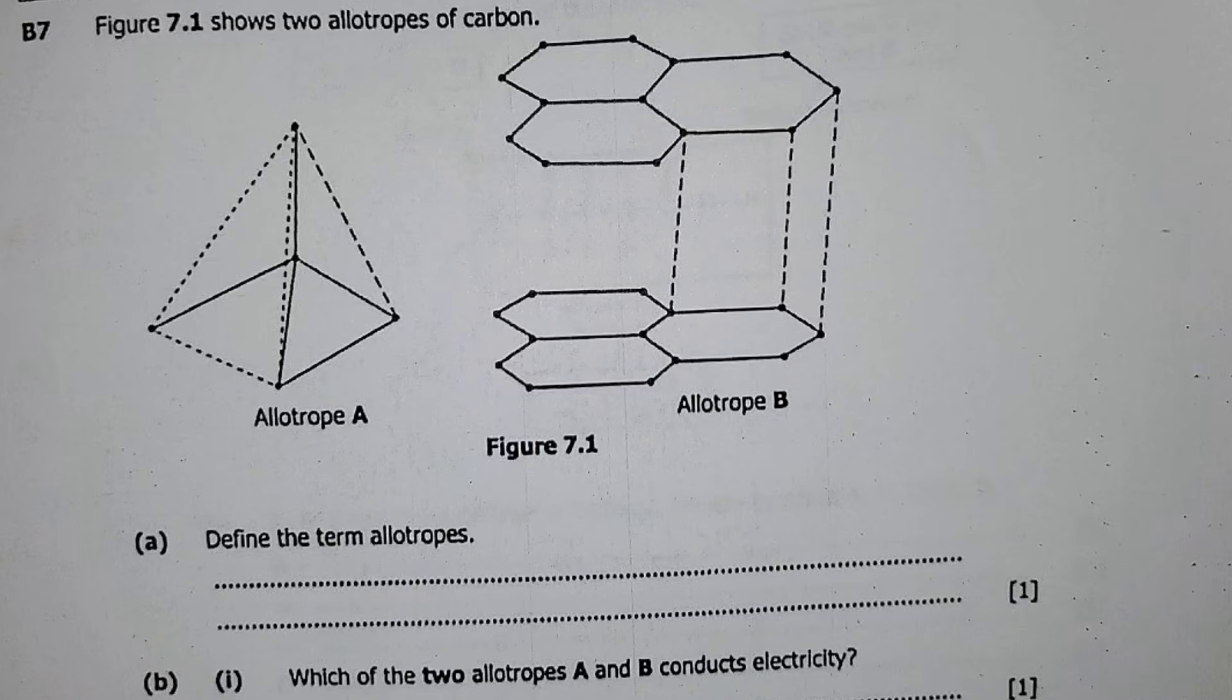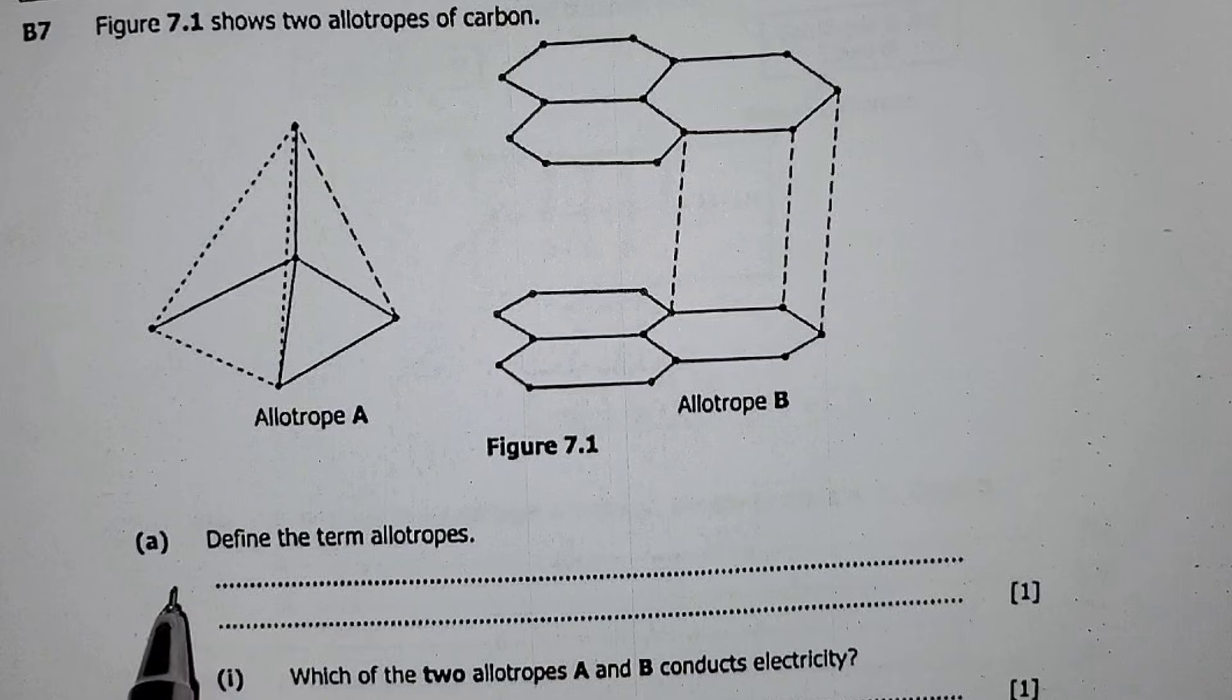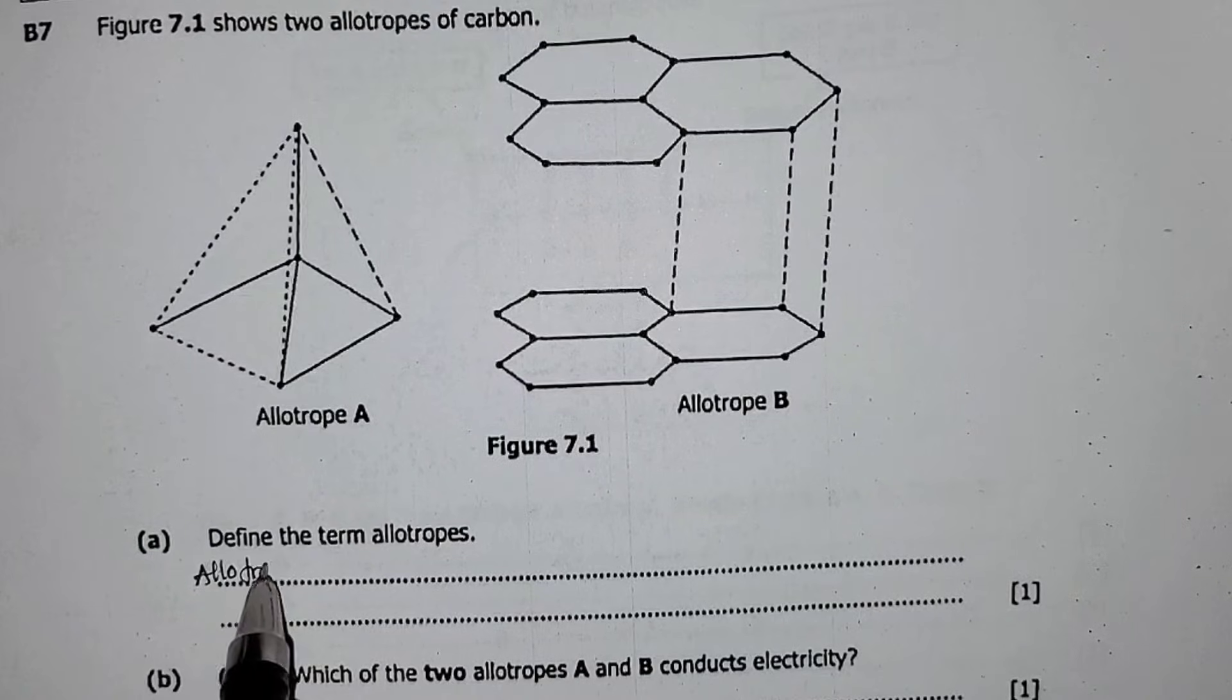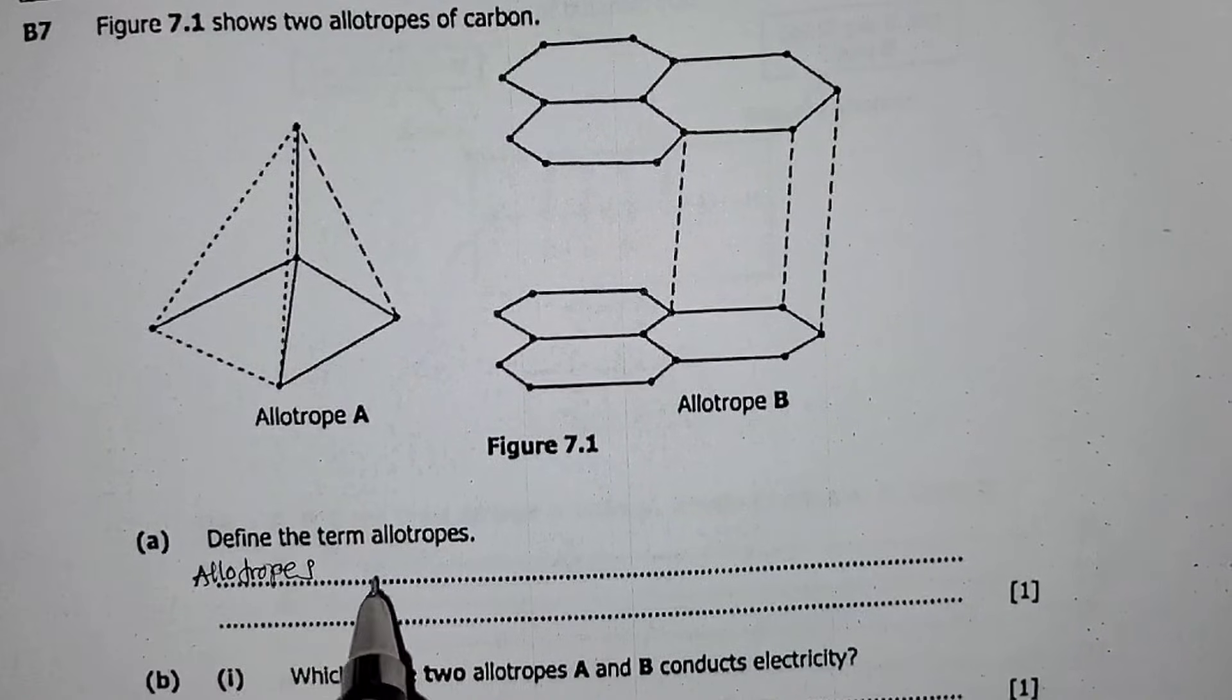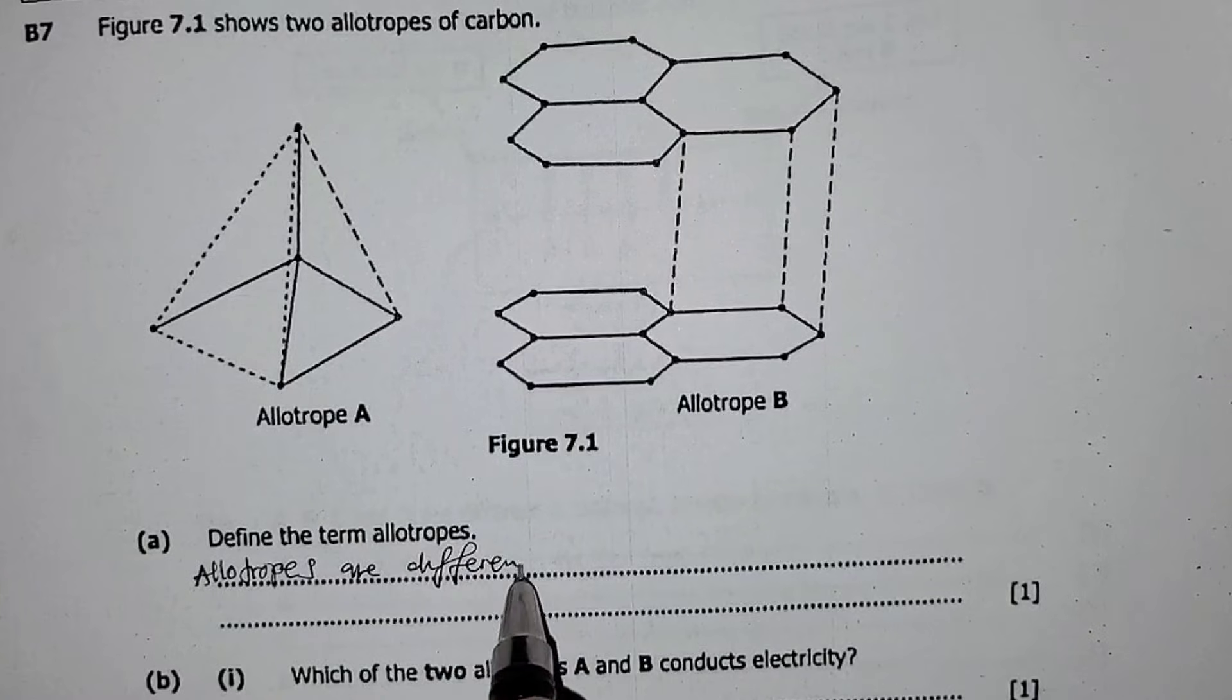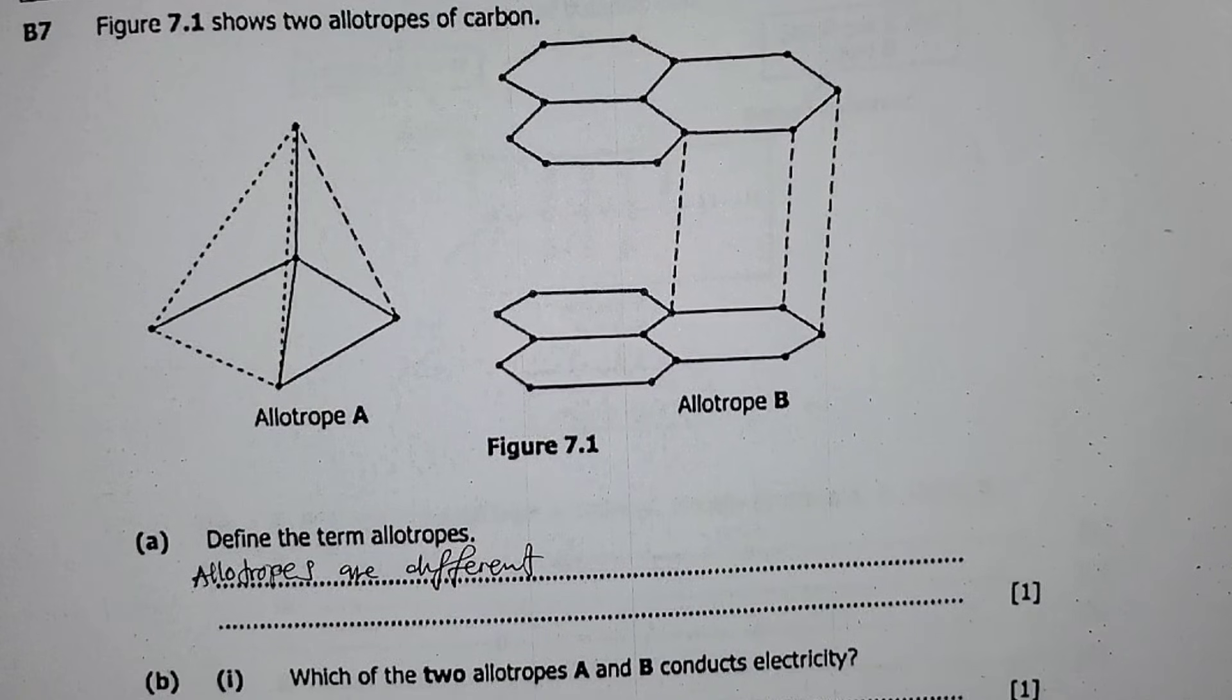Define the term allotropes. All right, so what are allotropes? So allotropes are different structural forms of the same chemical element that exist in the same physical state but have different physical